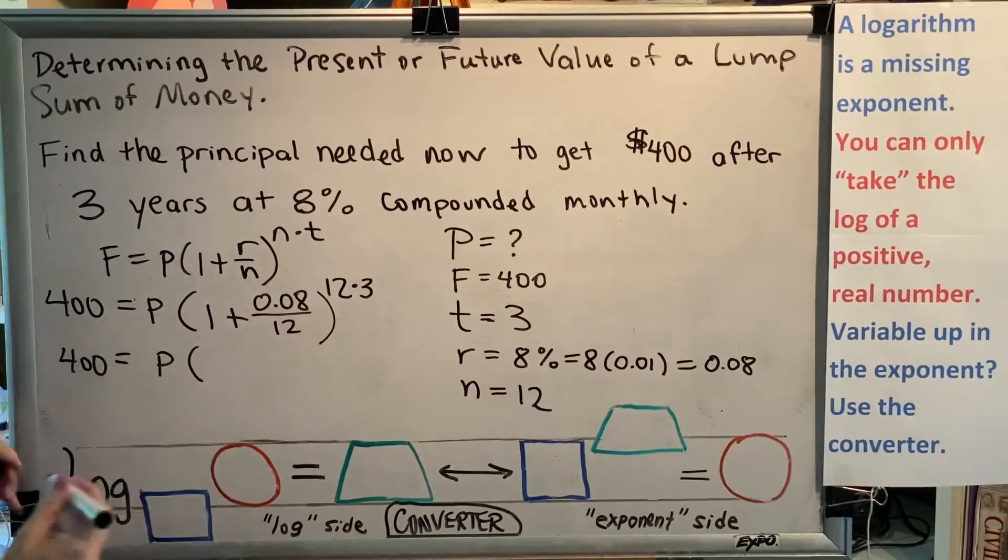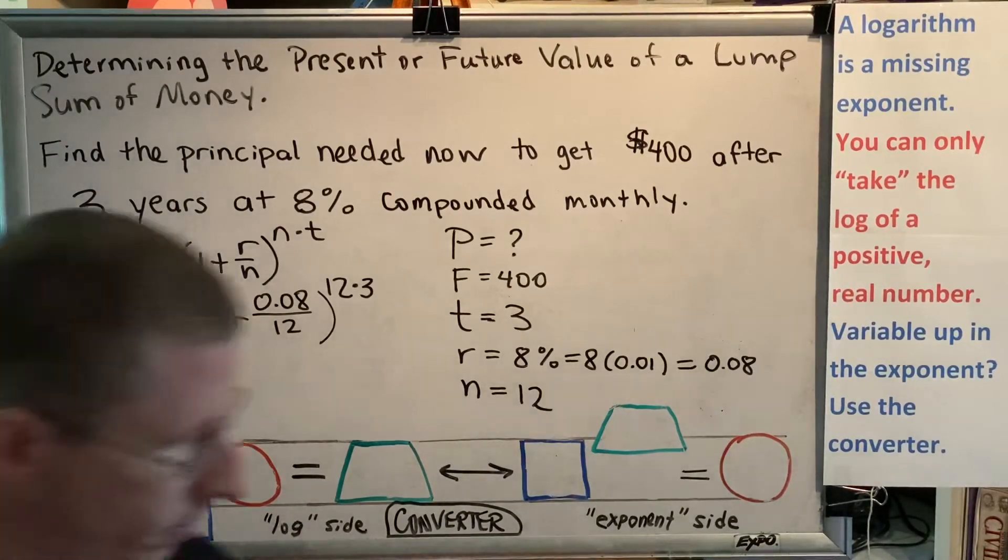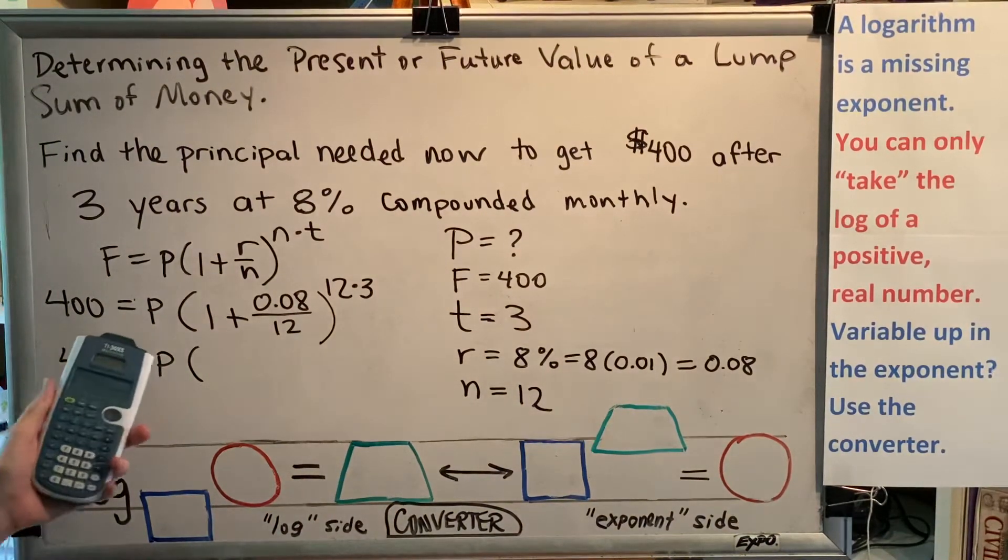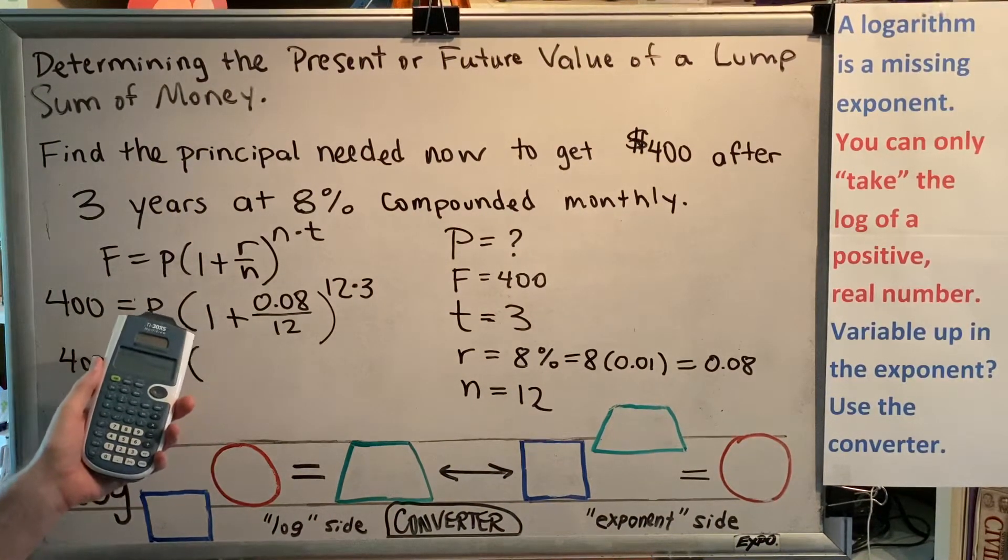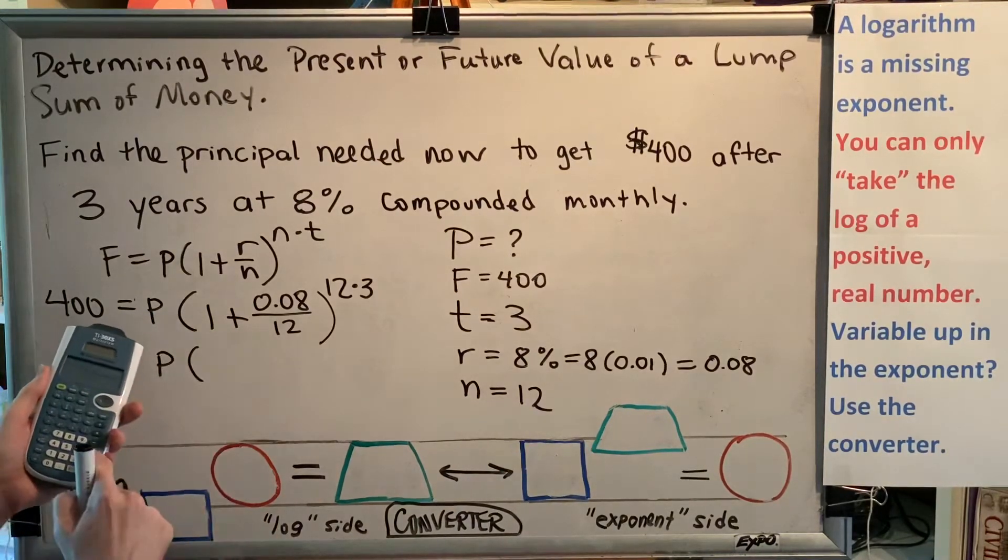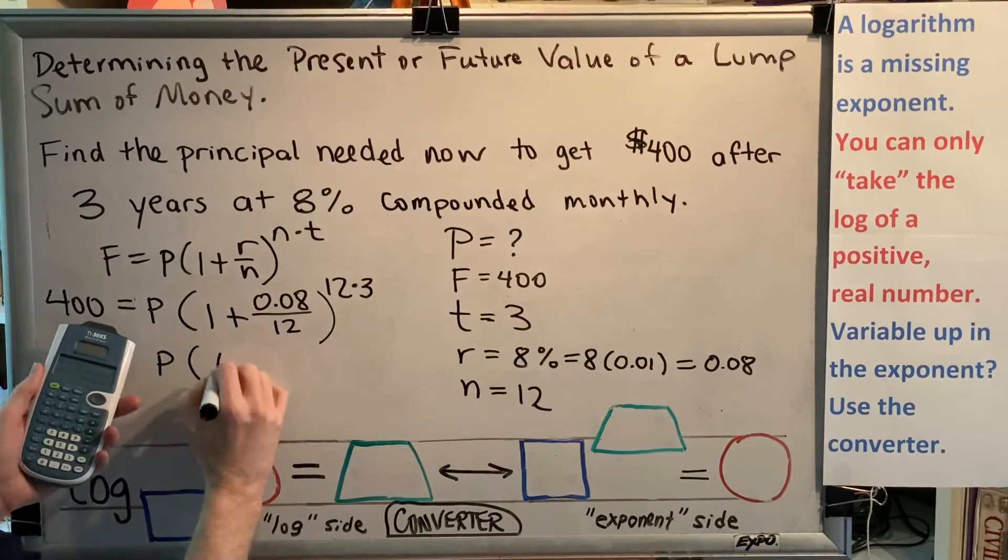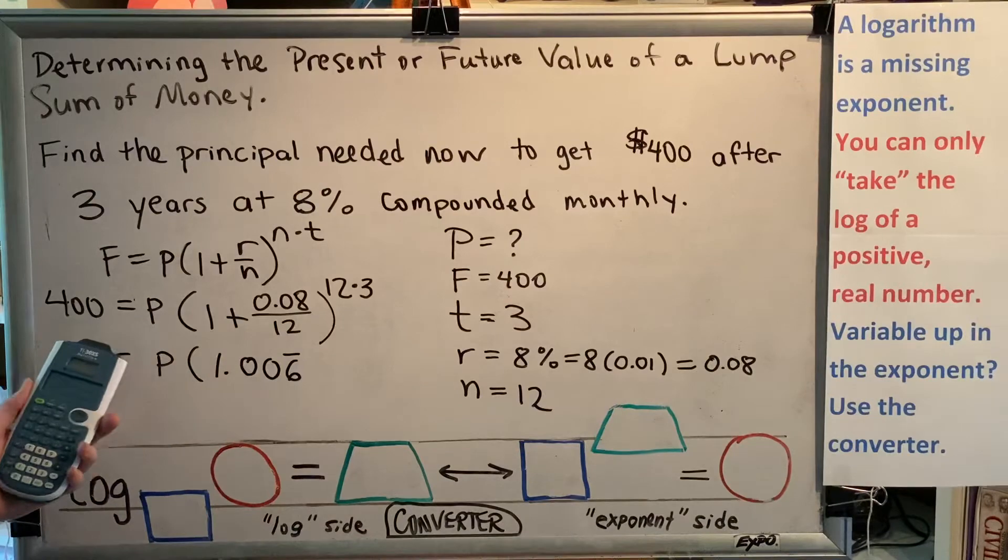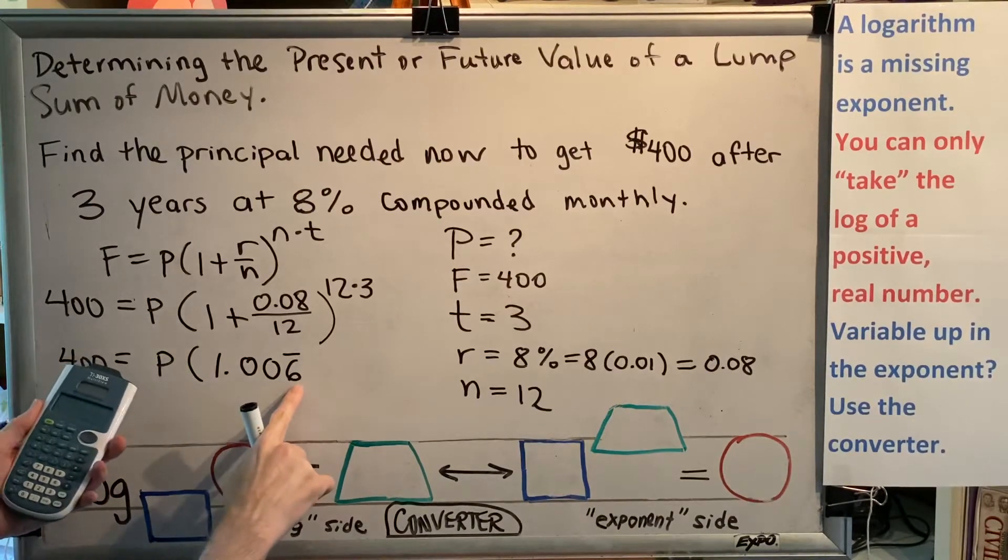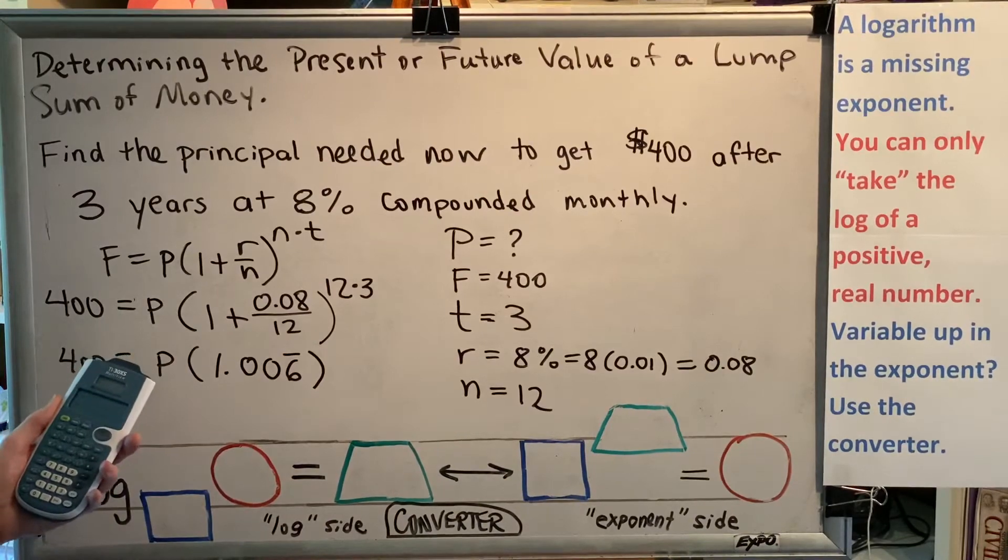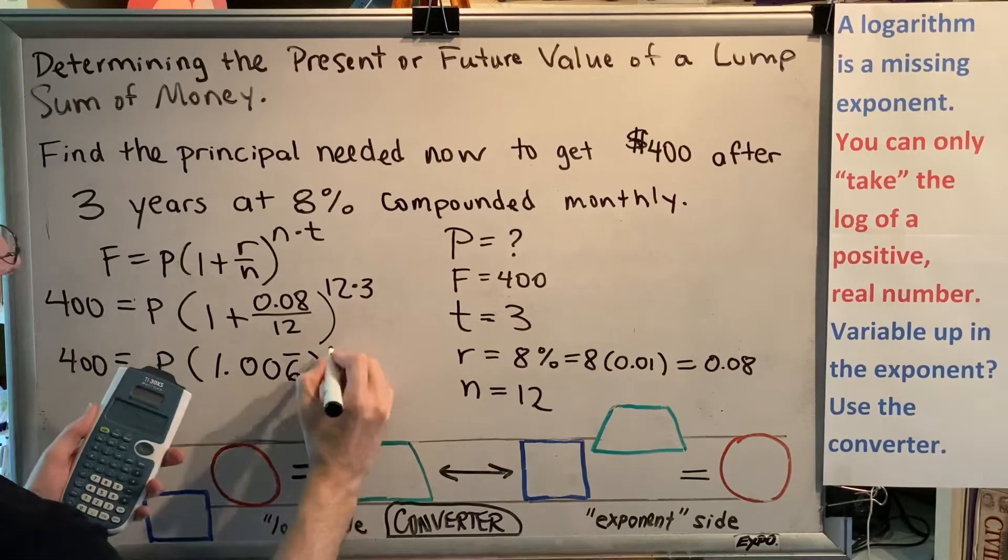Following order of operations, the first thing I want to do is 0.08 divided by 12. And I get a repeating decimal here. I get 0.00666666 and those sixes go on forever. And then when I add 1, I get 1.00 and then followed by an infinite number of sixes. You've probably seen before that when a digit repeats you can put a bar over it to indicate that that digit goes on forever. And 3 times 12 is 36.